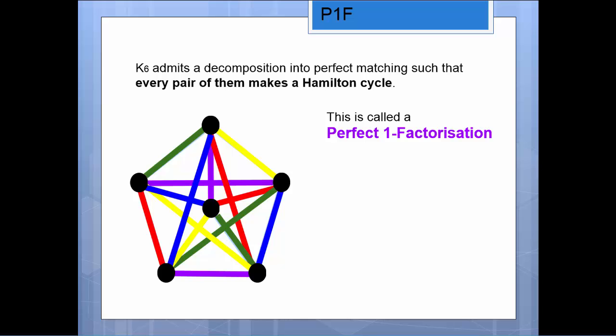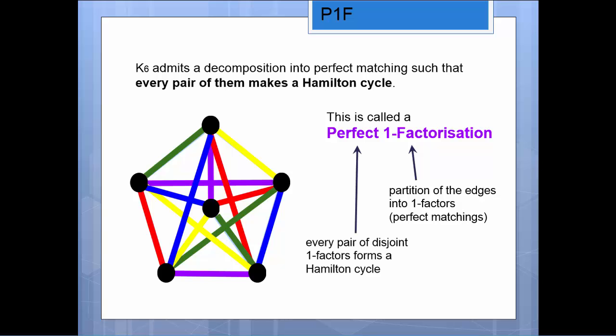Here what we have is five different perfect matchings, and any two of those five together forms a Hamilton cycle. That's actually ten Hamilton cycles. This is something that's called a perfect one factorization. The word one factorization means that we were able to partition the edges into perfect matchings, also called one factors. Having this really special property that every pair of the one factors has to form a Hamilton cycle—that's what makes it perfect.